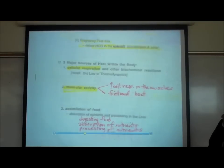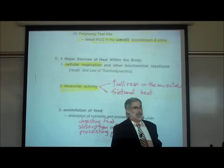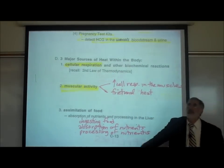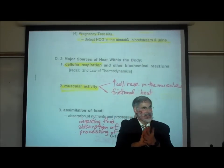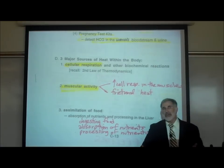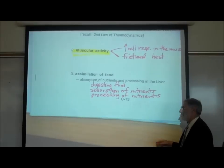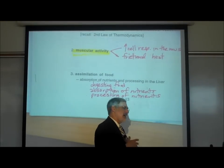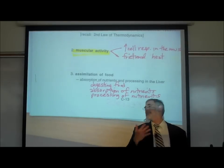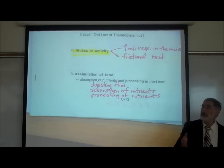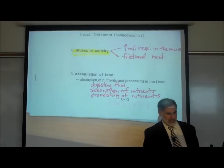A second source of heat is muscular activity, for two reasons: when you exercise, it speeds up cellular respiration because you need more ATP, and there is also frictional heat — just like rubbing your hands together, moving your body creates moving parts sliding over one another. The third source is the very process of processing food: digestion, absorption, processing in the liver, and storage of nutrients all involve biochemical enzymatic reactions that generate heat. Even eating a cold candy bar would help warm you up.